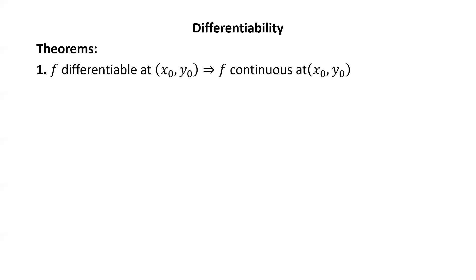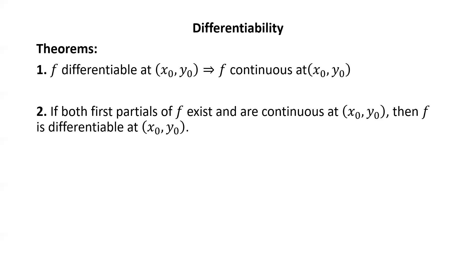A couple of useful theorems about differentiability. The first is that if f is differentiable at a point (x₀, y₀), then f is continuous at (x₀, y₀). The proof is very similar to what you would do in single variable calculus. The second theorem is that if both first partial derivatives of f exist and are continuous at (x₀, y₀), then f is differentiable at (x₀, y₀). In other words, for most functions in this course, we don't have to go through the whole procedure we just did to check differentiability.